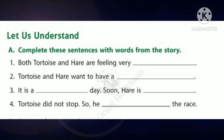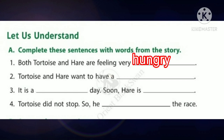Now take page number 20. Below the picture you can see the heading 'Let us understand,' Section A: complete these sentences with words from the story. First question: both tortoise and hare are feeling very dash. Yes, they are feeling very hungry, so they went to the cornfield. The answer: both tortoise and hare are feeling very hungry — H-U-N-G-R-Y.